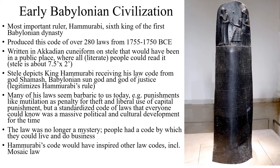Now we'll talk about what is perhaps the most enduring contribution of the early Babylonian civilization: Hammurabi's code of laws. The early Babylonian civilization's most important leader, Hammurabi, was the sixth king of the first dynasty. As king, Hammurabi produced over 280 laws which were codified between 1755 and 1750 BCE.